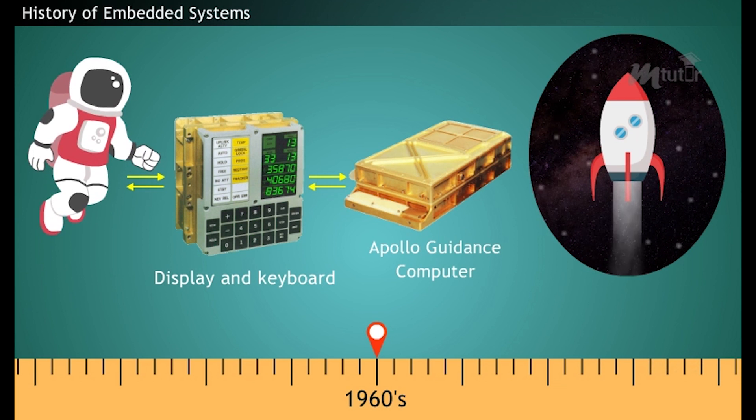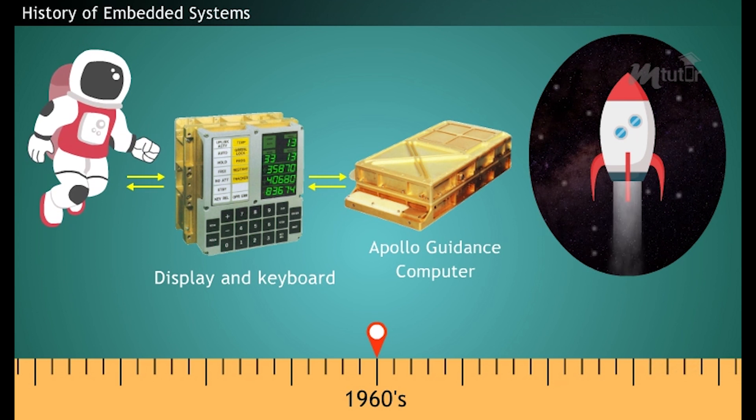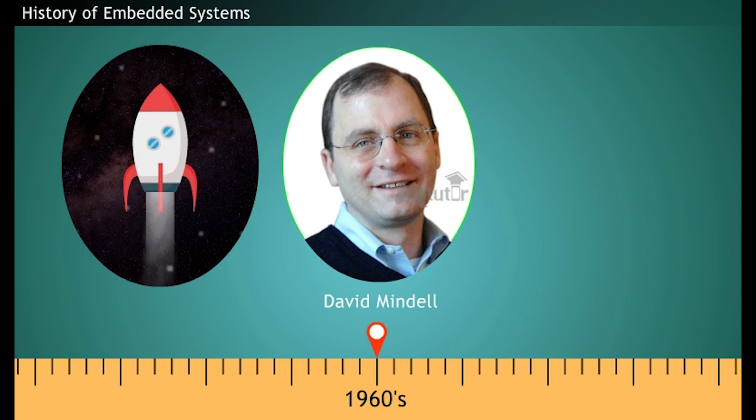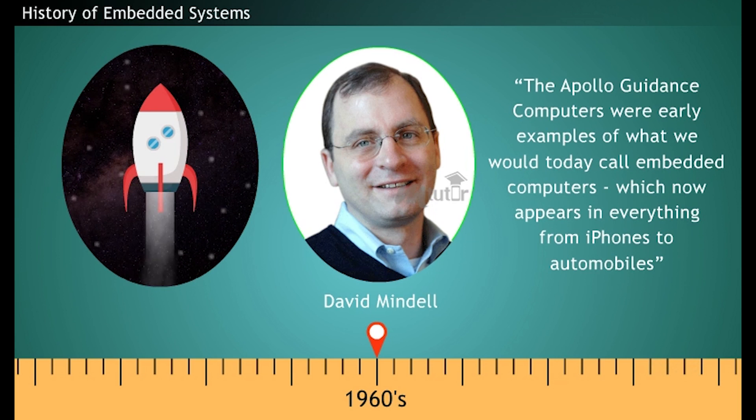It acts as a communication bridge between the astronaut and the computer. It provided the astronauts to input their commands numerically. MIT Professor David Mindel, who is the author of Digital Apollo, says the Apollo Guidance Computers were early examples of what we would today call embedded computers, which now appears in everything from iPhones to automobiles. Thus, Apollo Guidance Computer became the first recognized modern embedded system to this world.